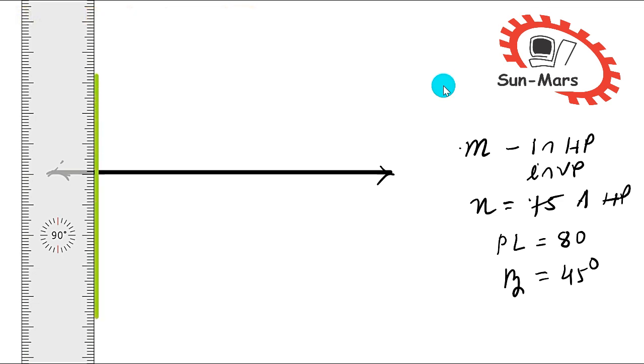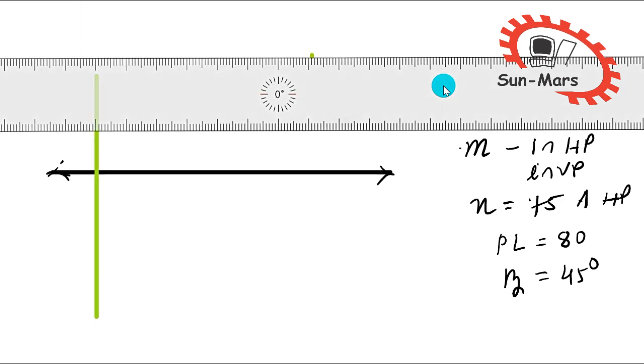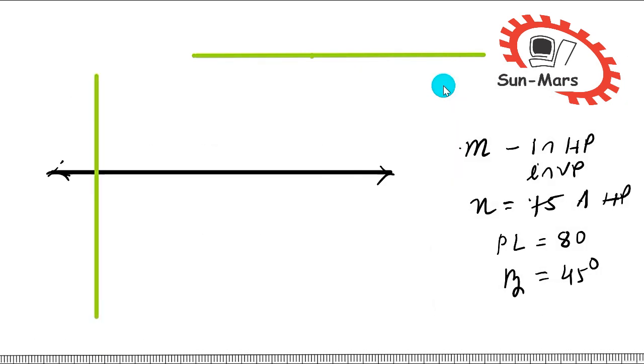Then the point N is 75mm above HP, so we will create a locus. The point M is in HP. This point is equal to M dash, and the N point is located here.